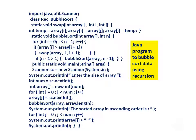bubbleSort(array, array.length). System.out.println — the sorted array in ascending order is. For int j equals 0, j less than num, j plus plus — System.out.print(array[j] + blank space). System.out.println().